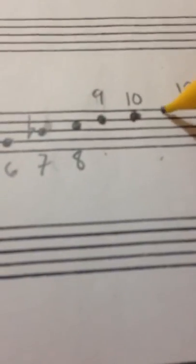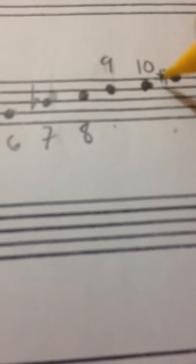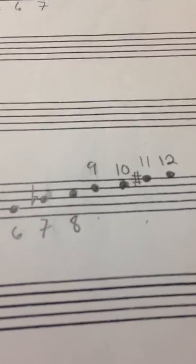And then, 11 is usually a little bit sharp. So that would be 11. So that is the horn in F.